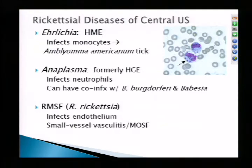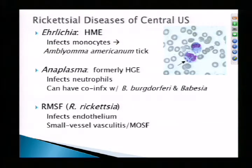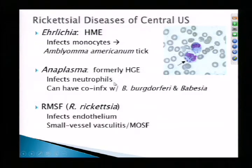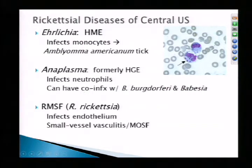Rickettsial diseases of the central U.S.: ehrlichiosis has been referred to as human monocytic ehrlichiosis, now simply called Ehrlichia infection. It infects monocytes and the vector is the Amblyomma americanum tick. Another rickettsial disease — formerly human granulocytic ehrlichiosis — has been renamed Anaplasma. It infects neutrophils, so morulae would be present in neutrophils. Because the vector is the same Ixodes tick as Lyme and Babesia, be aware of potential co-infections or even tri-infections.